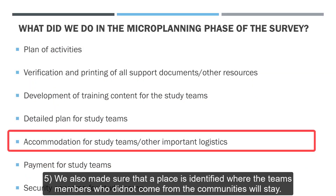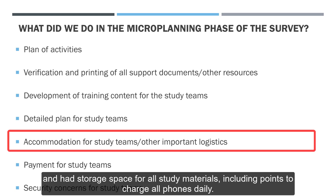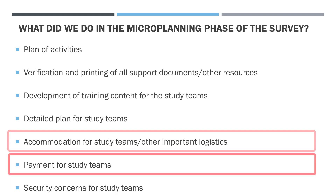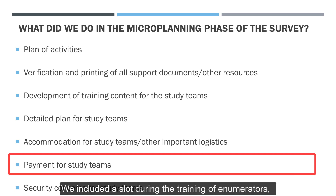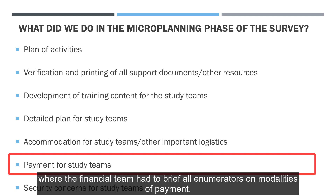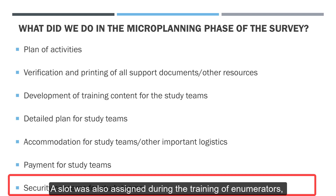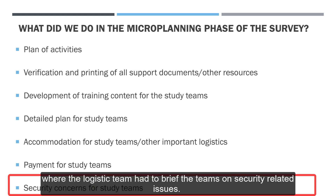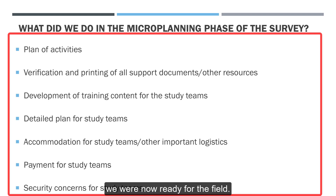We also identified a place where team members who did not come from the communities would stay. This place had enough parking for cars and motorbikes, storage space for all study materials, including charging points for all phones daily. We ensured clear information on the modalities of payment for each team member and included a slot during training where the financial team briefed enumerators on payment modalities. We also ensured clear information on security concerns, with a slot for the logistics team to brief teams on security-related issues. Once the micro plan was clearly made, we were ready for the field.